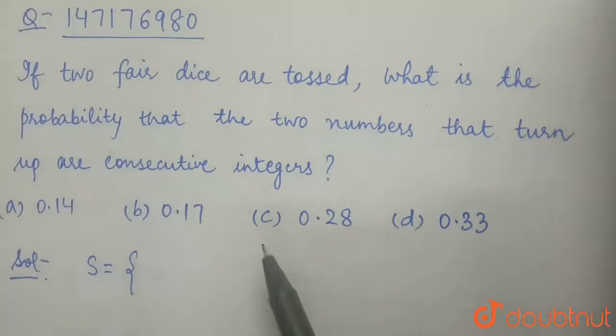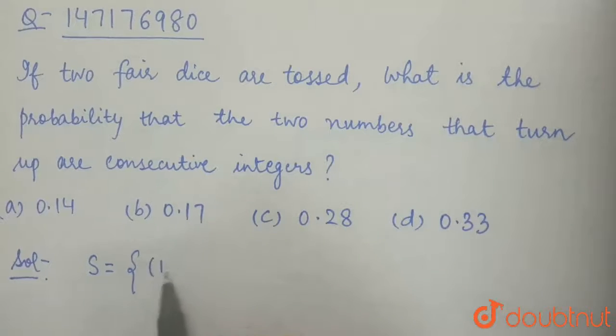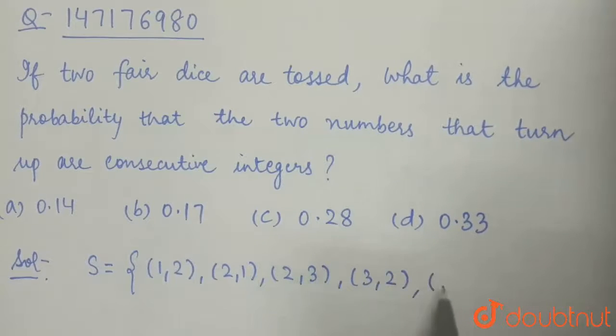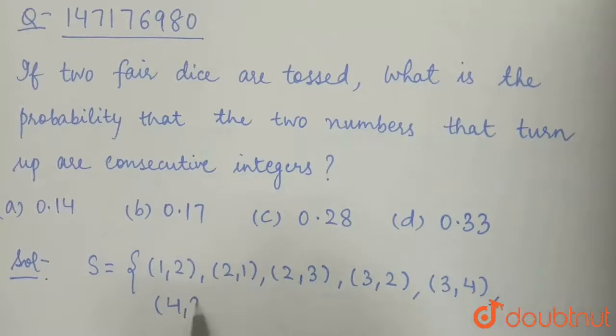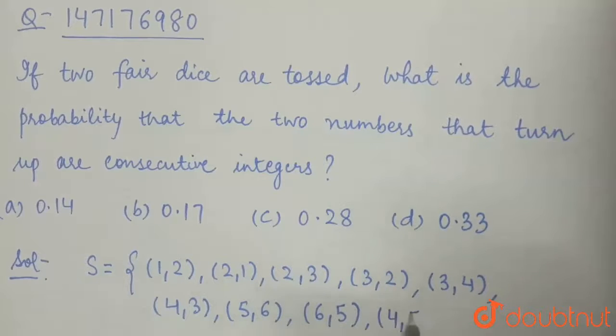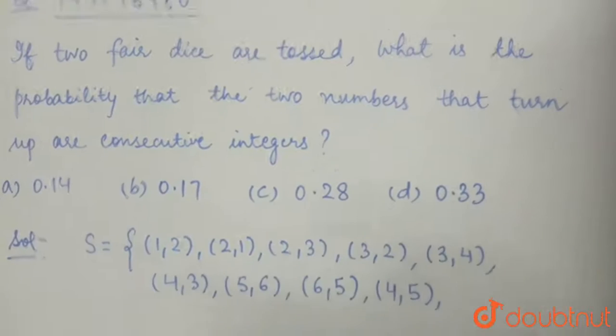These are all consecutive numbers. So we have the pairs: (1,2), (2,1), (2,3), (3,2), (3,4), (4,3), (5,6), (6,5), (4,5), and (5,4).